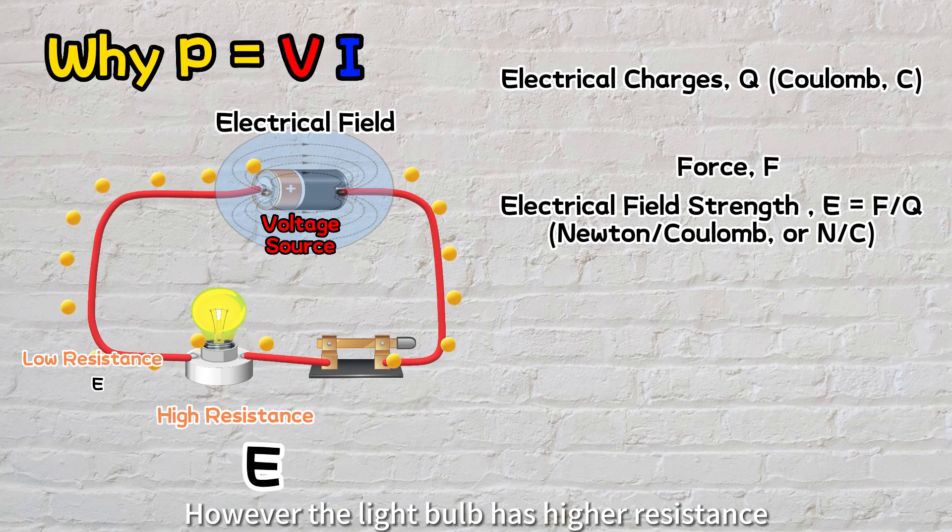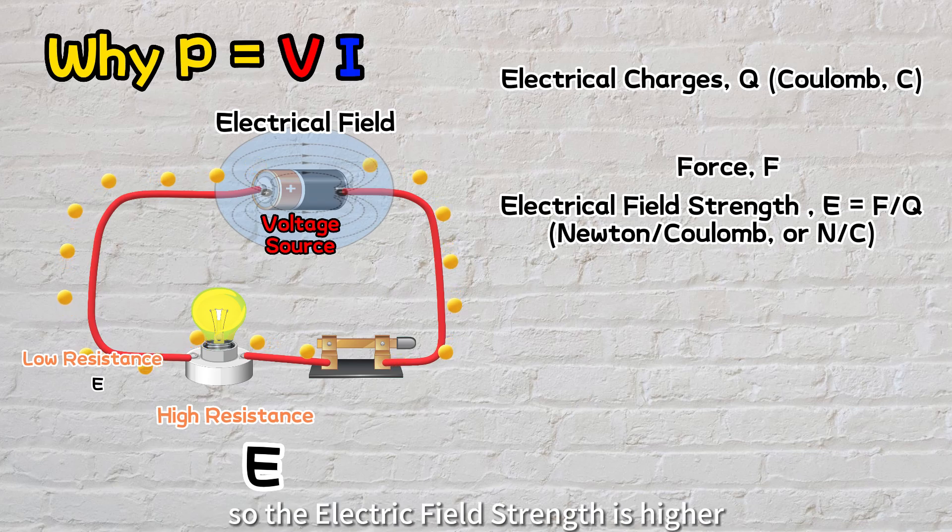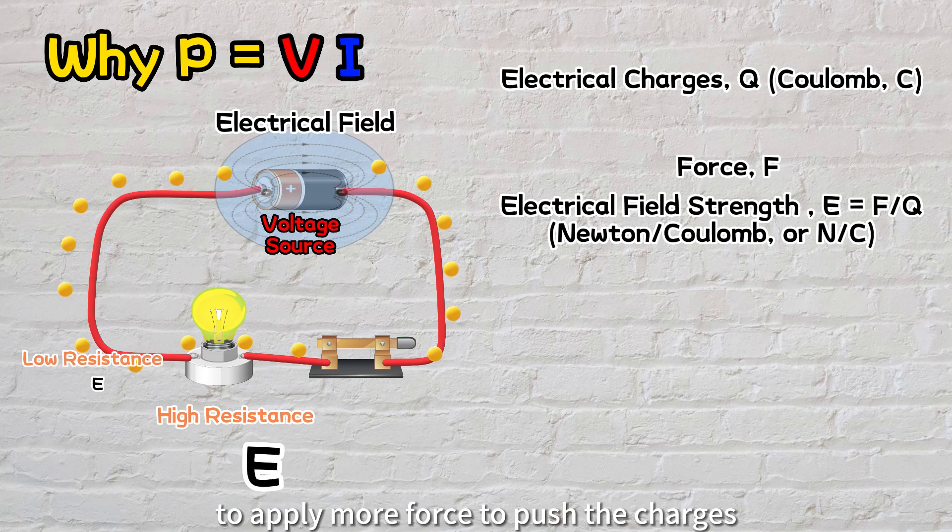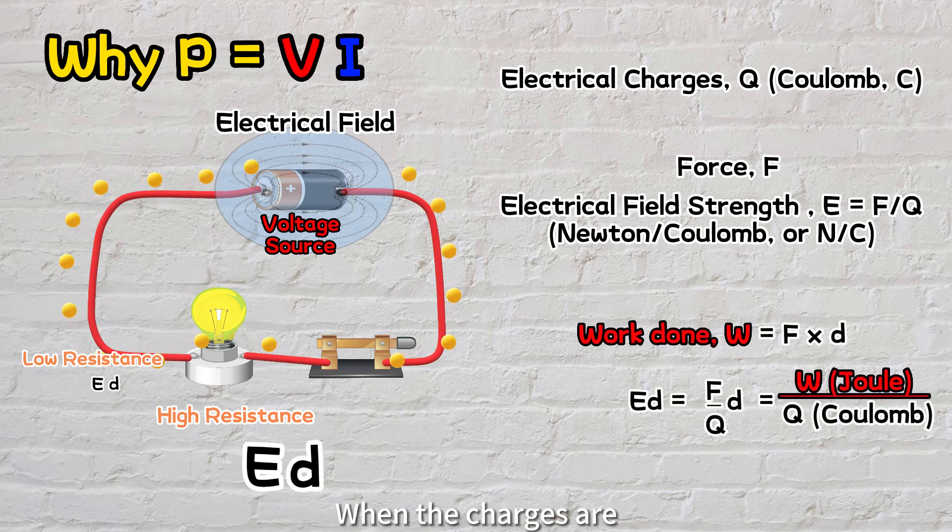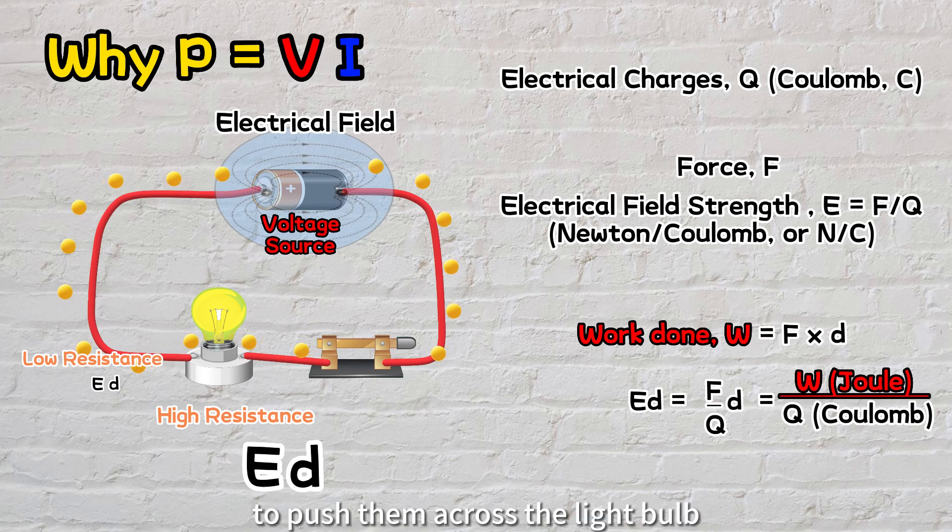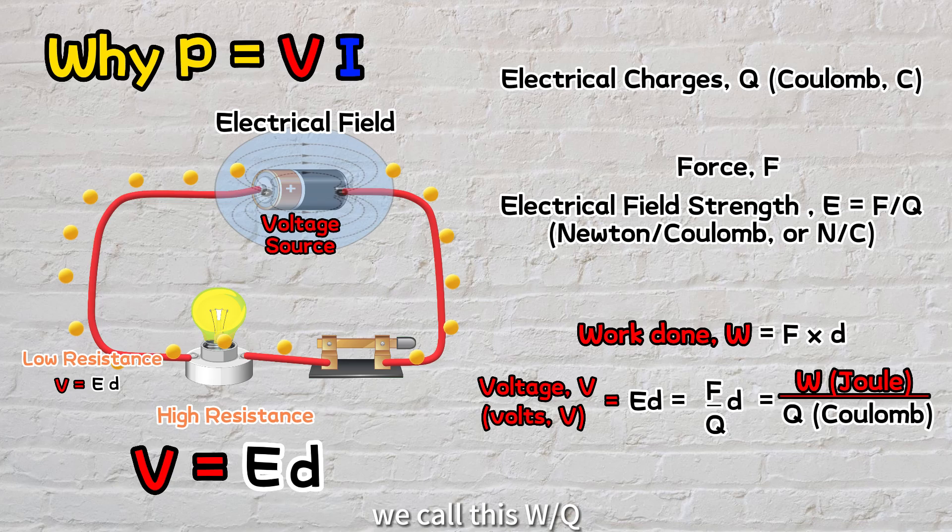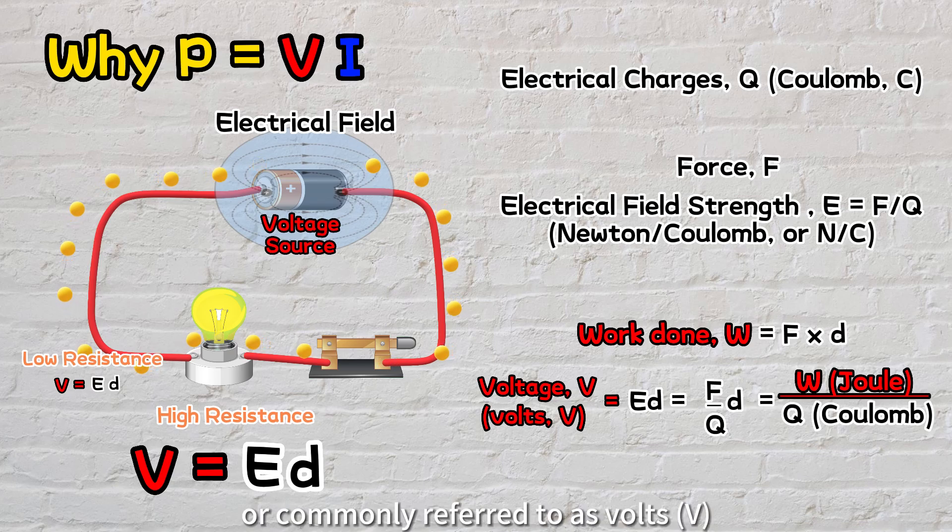However, the light bulb has higher resistance, so the electric field strength is higher to apply more force to push the charges as they keep bumping into the atoms in the filament of the light bulb. When the charges are moved through a distance in the circuit, more work is done to push them across the light bulb compared to the cable. We call this work done per coulomb of charge as voltage or potential difference, measured in joules per coulomb or commonly referred to as volts.